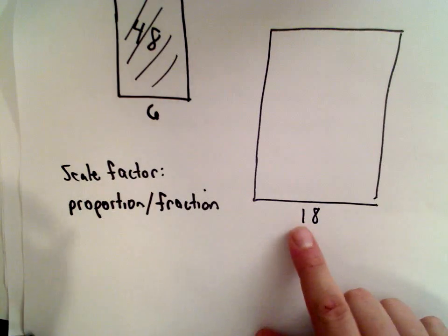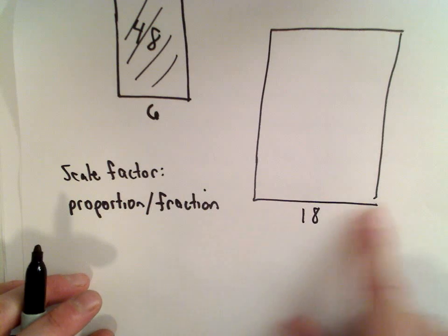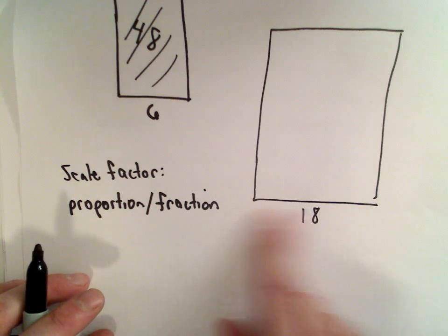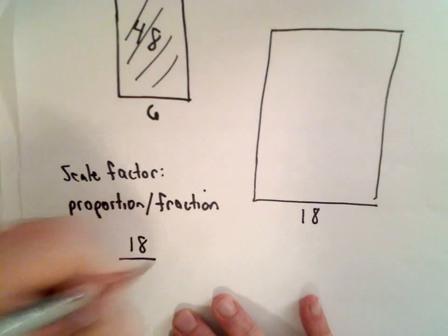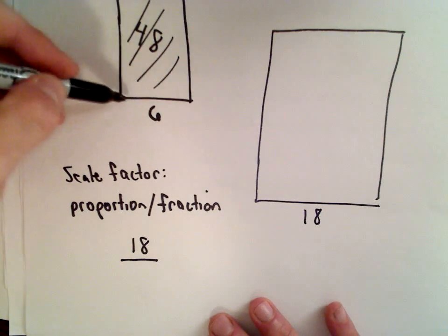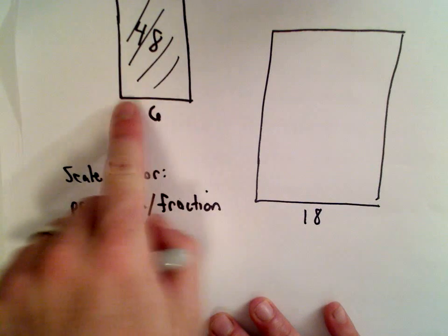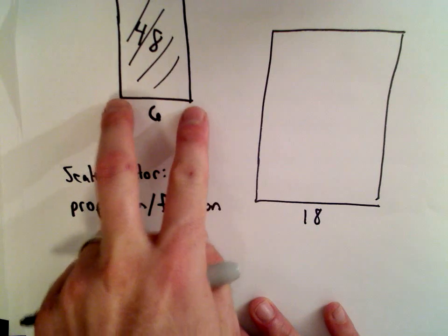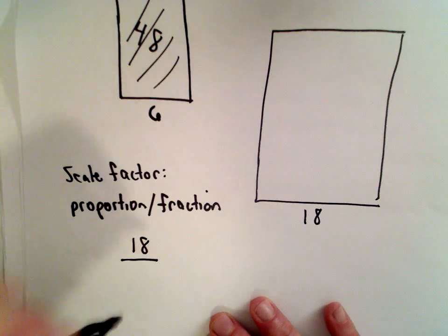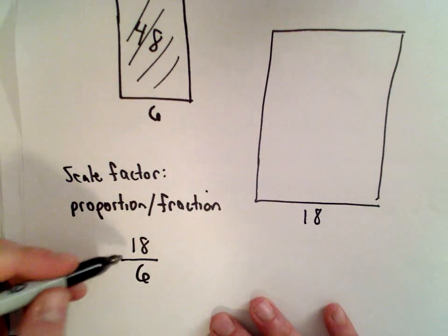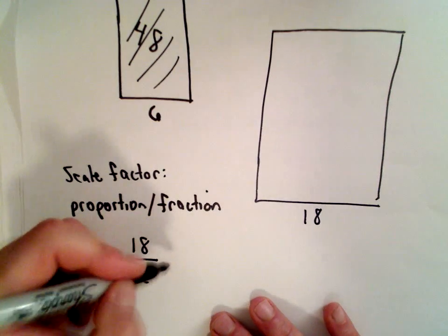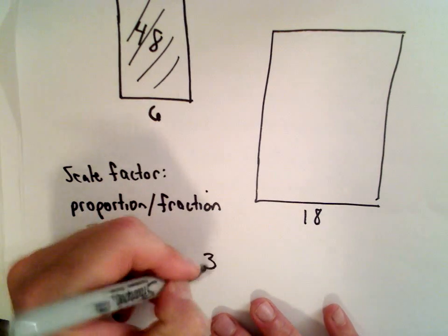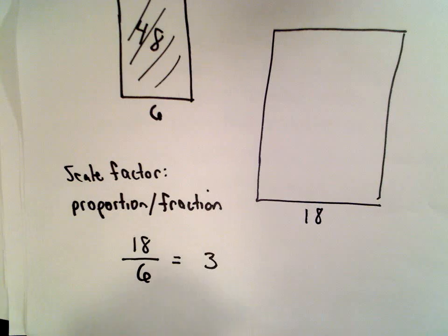So I'm going to take the length on the larger rectangle and divide that by the side length on the smaller rectangle which is 6 and that's all we have to do. So 18 divided by 6 that's going to give us 3 and that's going to be our scale factor in this case.